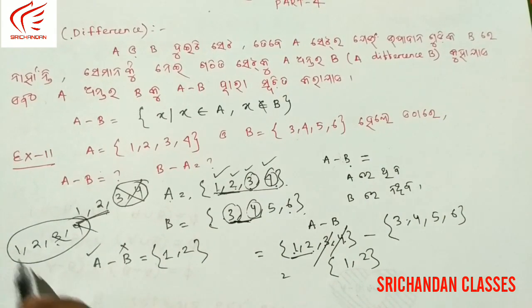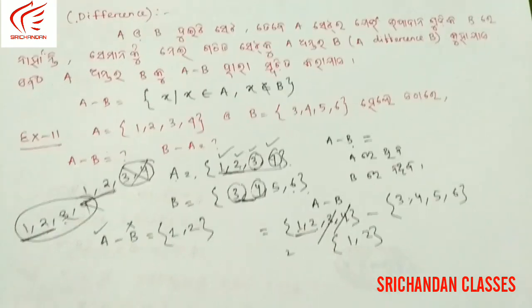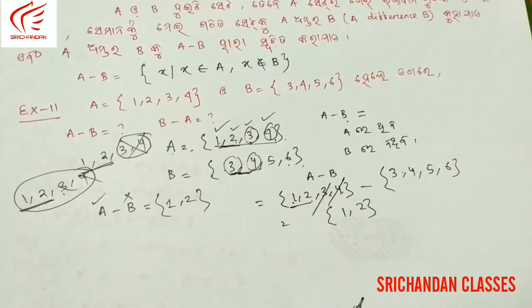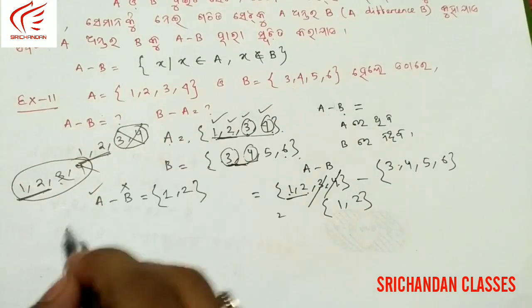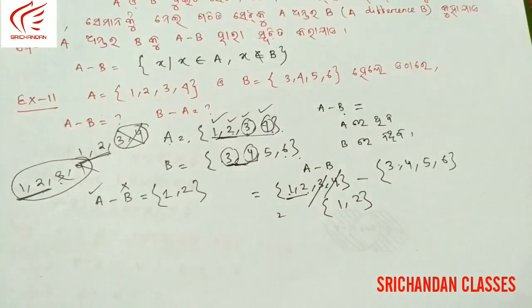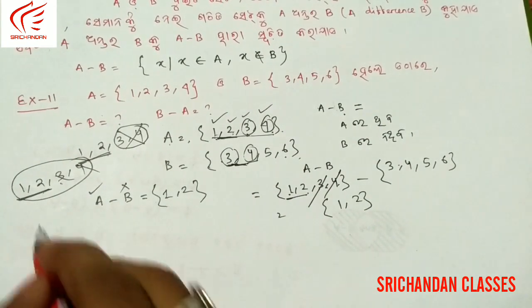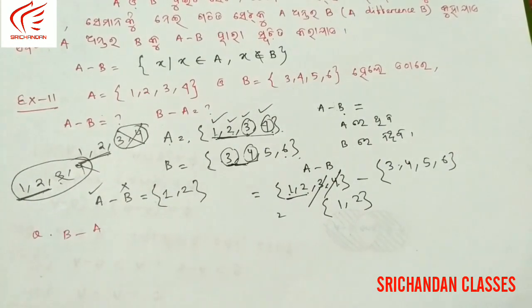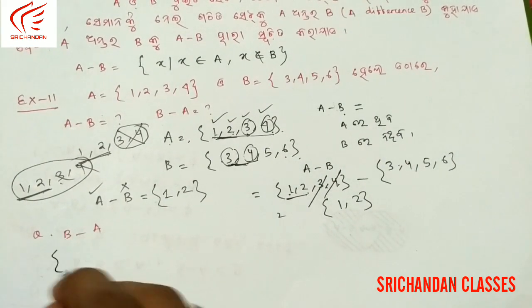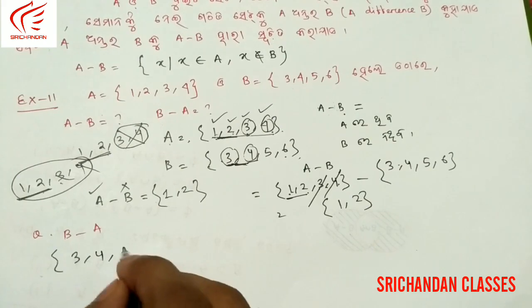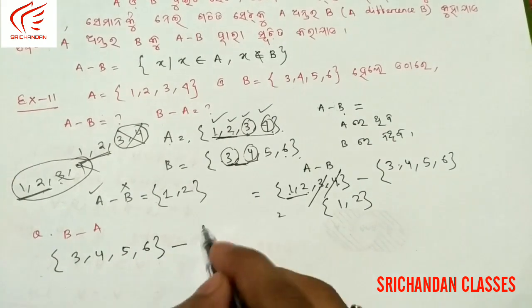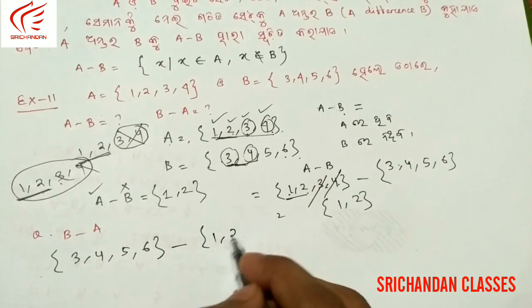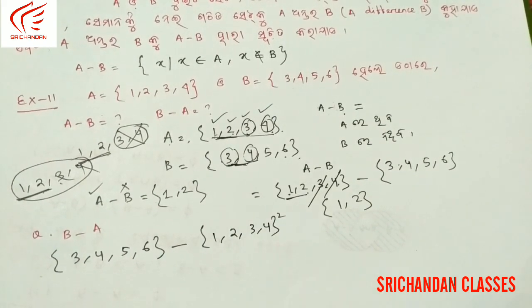Now this is B set. The rest of B set: B set is 1, 2, 3, 4, 5 minus A set which is 1, 2, 3, 4. I will show you B set minus A set. B set has elements 2, 3, 4, 5 and we subtract A set: 1, 2, 3, 4.